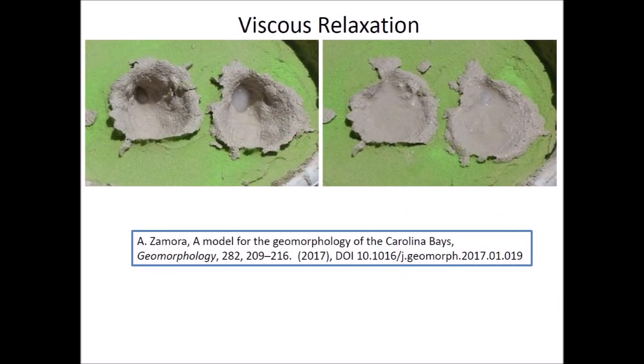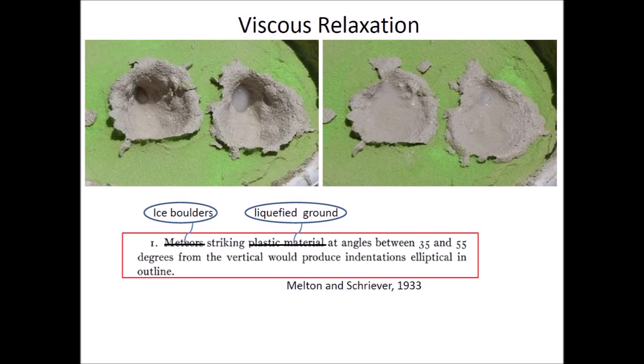Viscous relaxation was the final stage of Carolina Bay formation. After the ice bombardment created penetration funnels, viscous relaxation — driven by gravity and intensified by the seismic vibrations produced by the ballistic sedimentation — decreased the depth of the cavities to create the elliptical bays in Nebraska and on the East Coast. From our contemporary perspective, we can see that Melton and Shriver had the right idea in 1933 by proposing that impacts on plastic material could have created the Carolina Bays. However, we now know that the plastic material consisted of unconsolidated ground liquefied by the impacts themselves, and that the Carolina Bays were not made by meteors. The discovery of the Nebraska Rainwater Basins and the convergence of the major axes near the Great Lakes makes it more likely that secondary impacts by glacier ice boulders ejected by an extraterrestrial impact on the Laurentide Ice Sheet were the most likely projectiles.